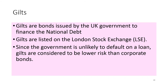Gilts are bonds issued by the UK government. More specifically, the debt securities are issued by the Bank of England and are listed on the London Stock Exchange. In conventional gilts, the government will pay the holder a coupon or cash payment every six months until maturity. Since the government is unlikely to default on a loan, gilts are considered to be lower risk than corporate bonds.